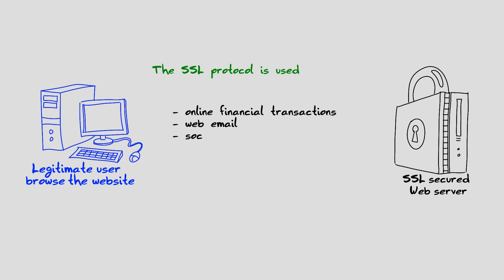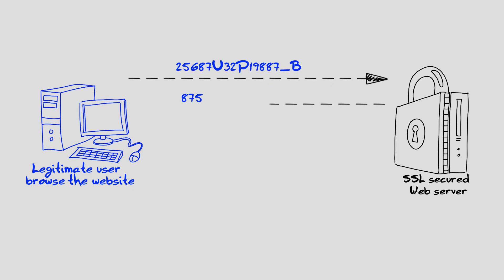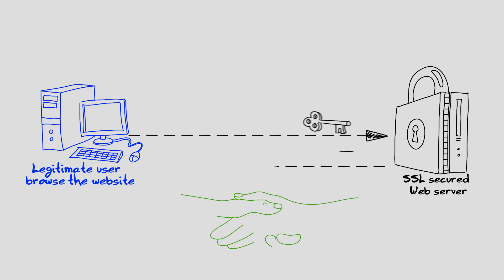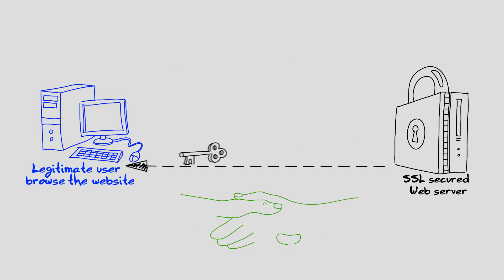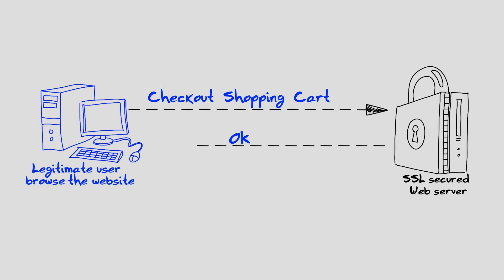In order to establish a secure connection, the client and server exchange encryption keys during a process named SSL handshake. At the end of the handshake, the client and the server use the keys to encrypt and decrypt the data they send to each other, and to validate its integrity.